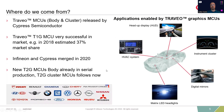So where do we come from? Taveo first-generation MCUs with body and cluster were released by Cypress Semiconductor. The Taveo first-generation was and still is very successful in the market, and now we are releasing the second-generation MCUs. The body parts are already in serial production; the cluster parts are following now. Infineon and Cypress merged in 2020, therefore you see the Infineon logo on this presentation.